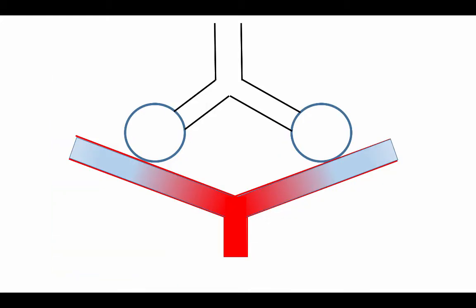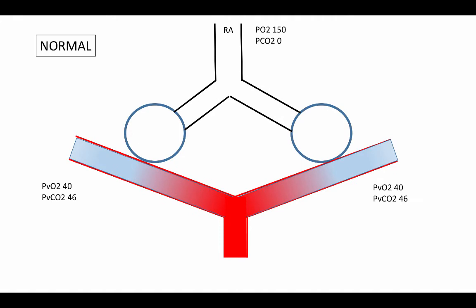You're going to get really familiar with this very simplistic two-alveolus, two-capillary model. Let's plug in some normal numbers to see how this works. So as we're breathing room air, the partial pressure of oxygen in room air is about 150 millimeters of mercury, and there's undetectable amounts of carbon dioxide.